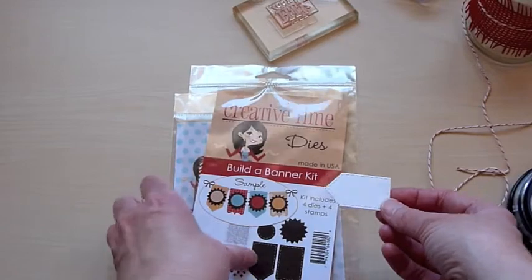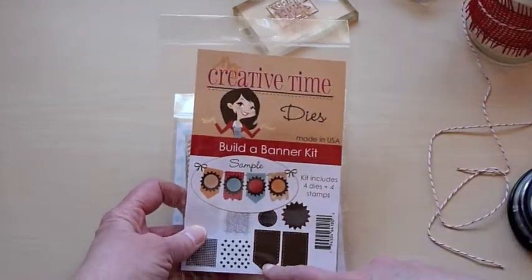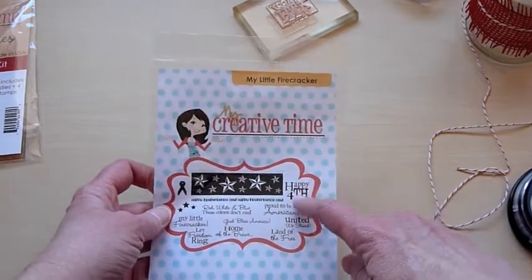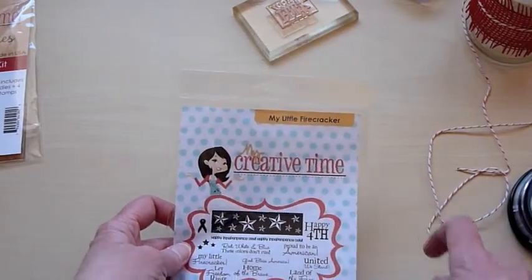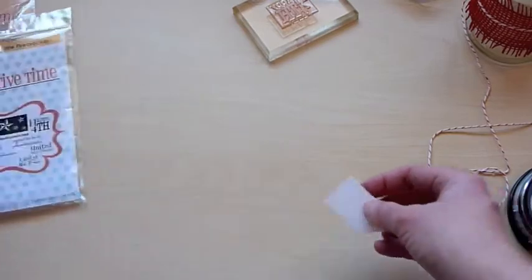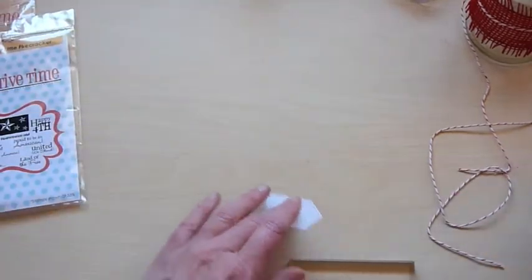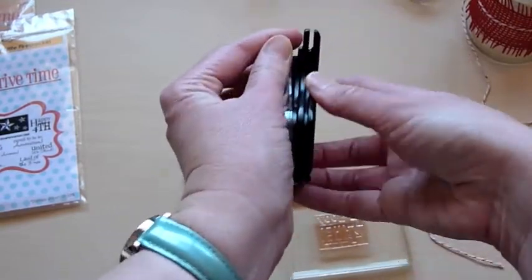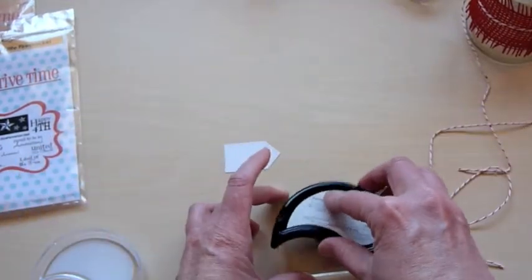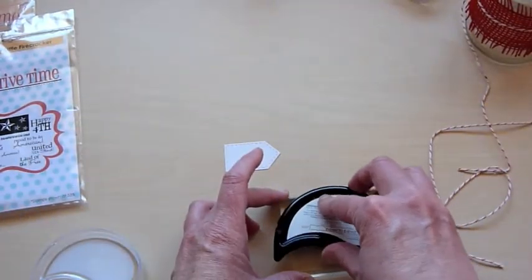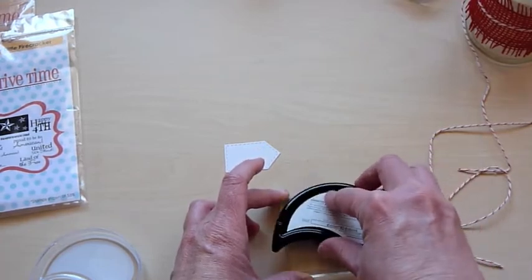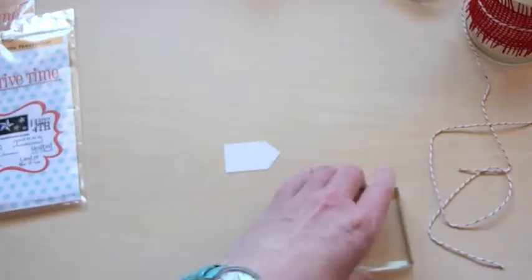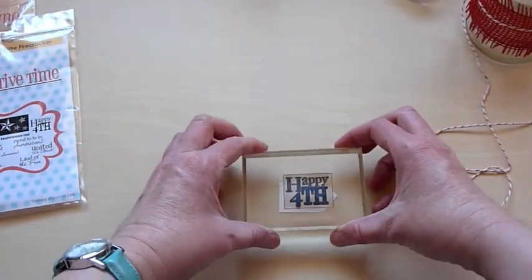So I just went ahead and cut out this tag, also from the Build-A-Banner kit. And the stamp I'm going to use on it is this Happy Fourth from the My Little Firecracker stamp set. So I think it's going to be a tight fit, and I'm not sure if I'm going to like it because it's going to go onto the stitching, but we'll see. So I'm using some Paper Tray Ink, Enchanted Evening Ink, get that inked up. Let's see how this works.